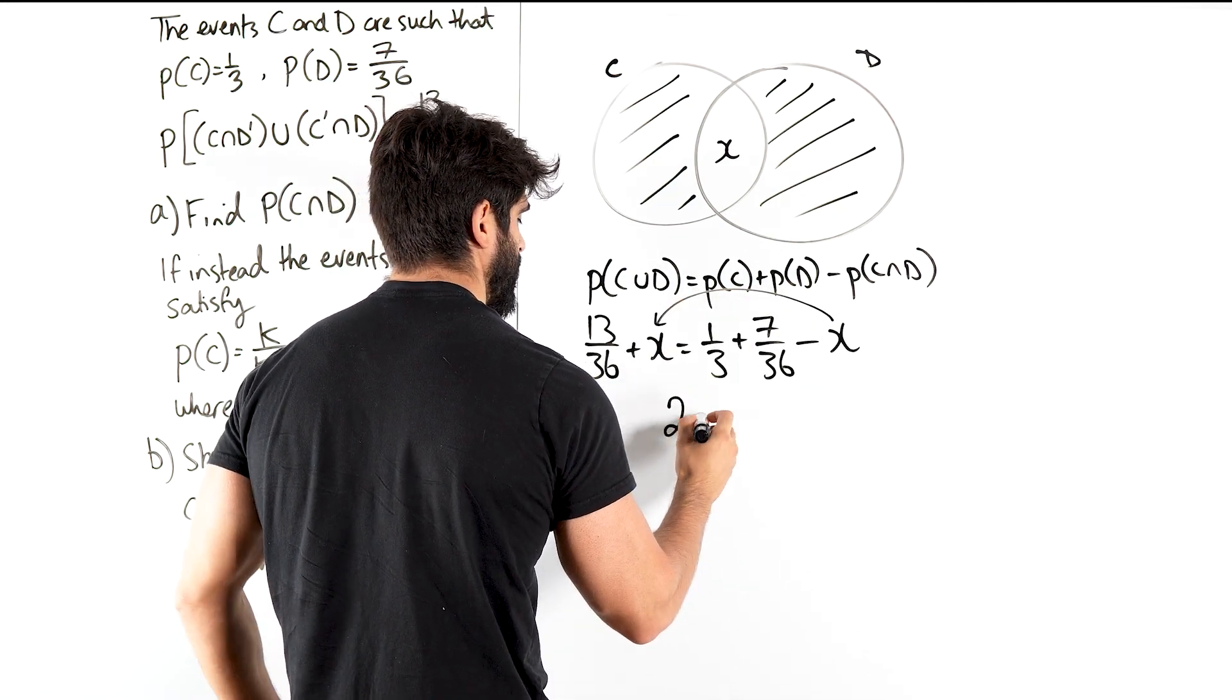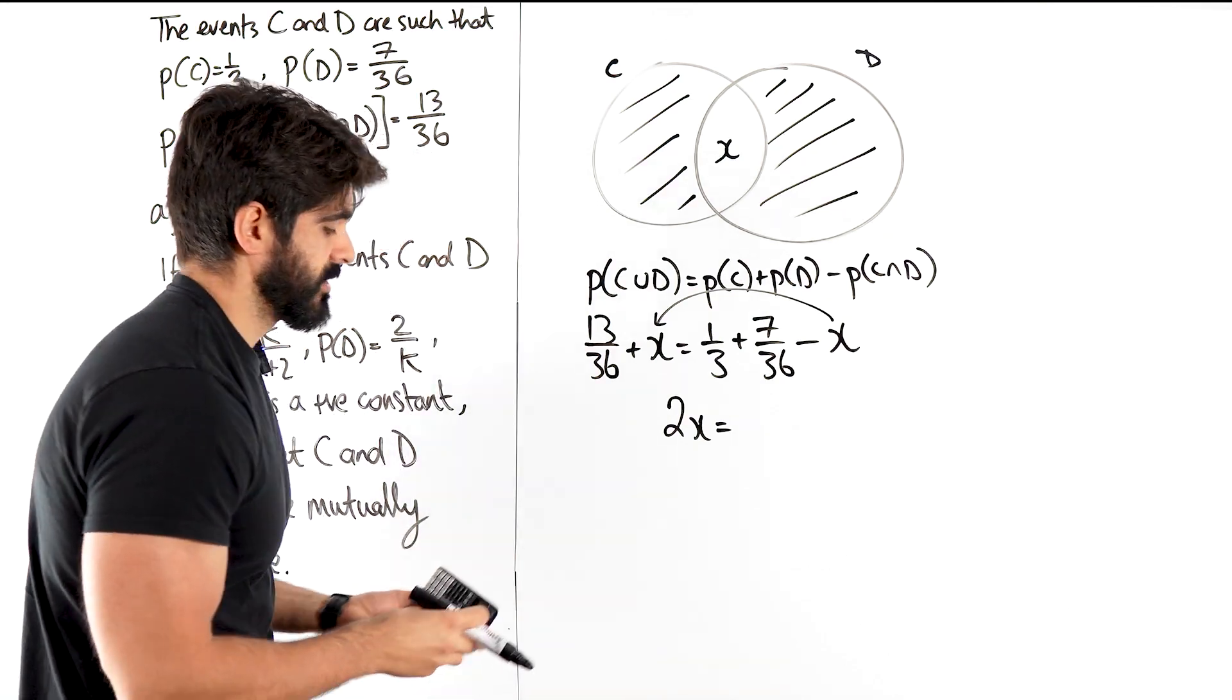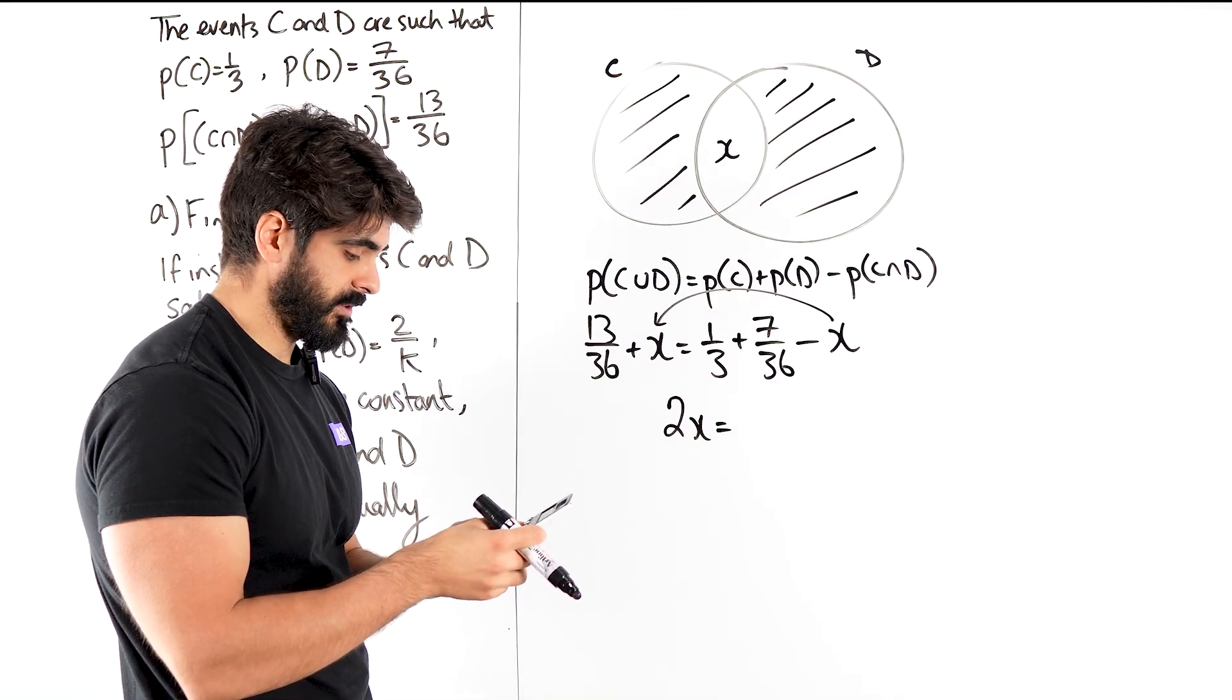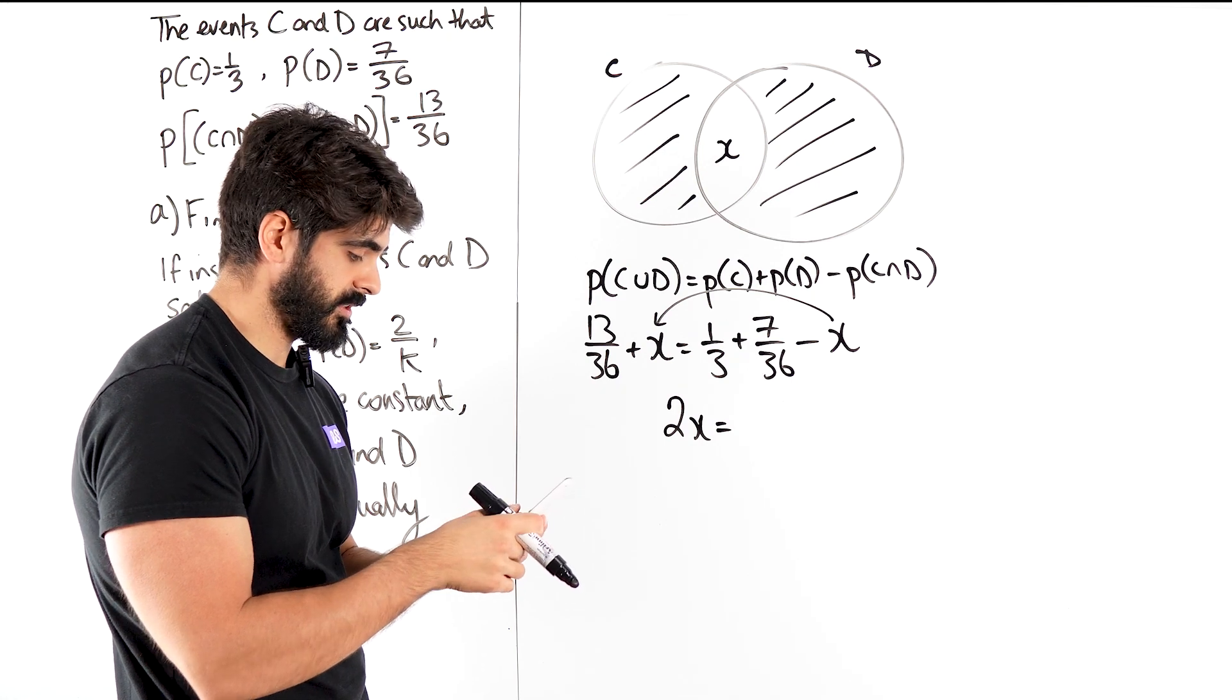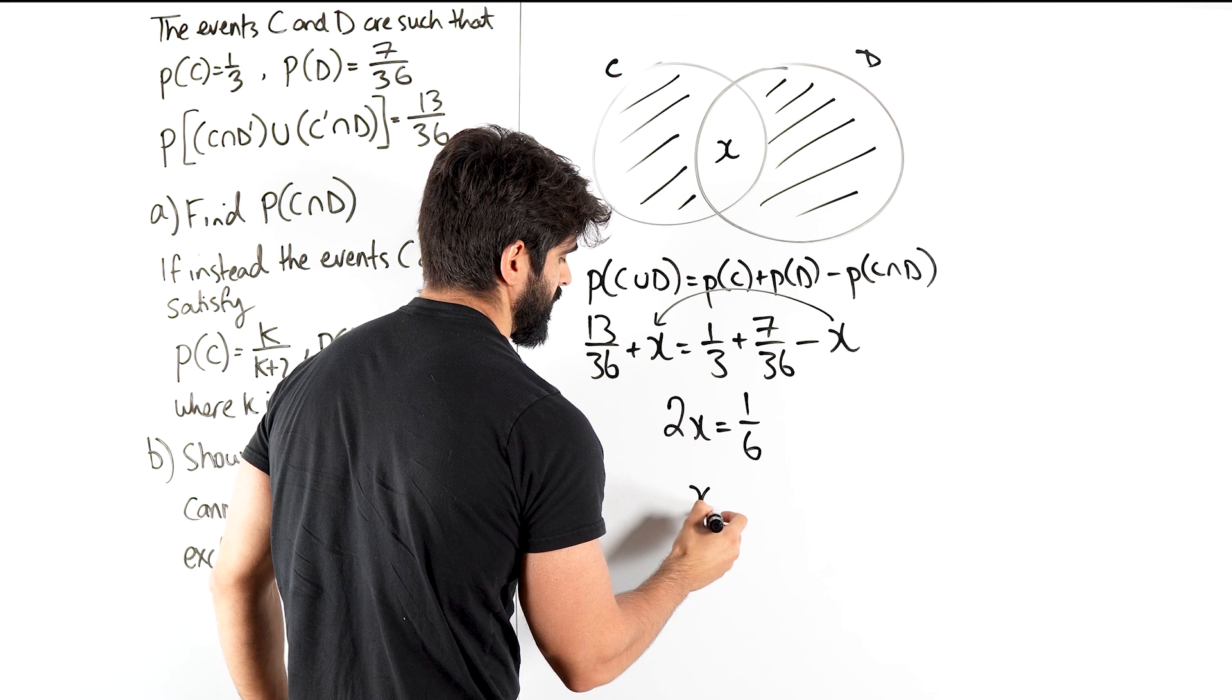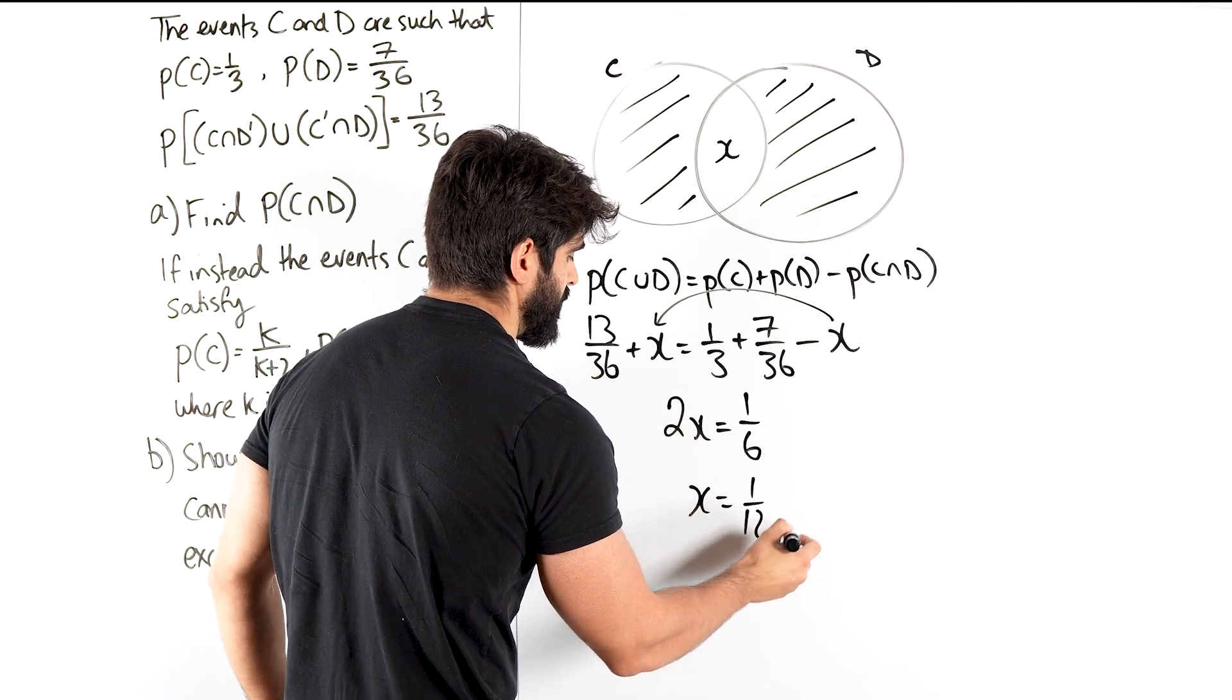2X is 1 third plus 7 over 36 minus 13 over 36. A twelfth. Divide both sides by 2. Easy peasy, squeeze the lemon.